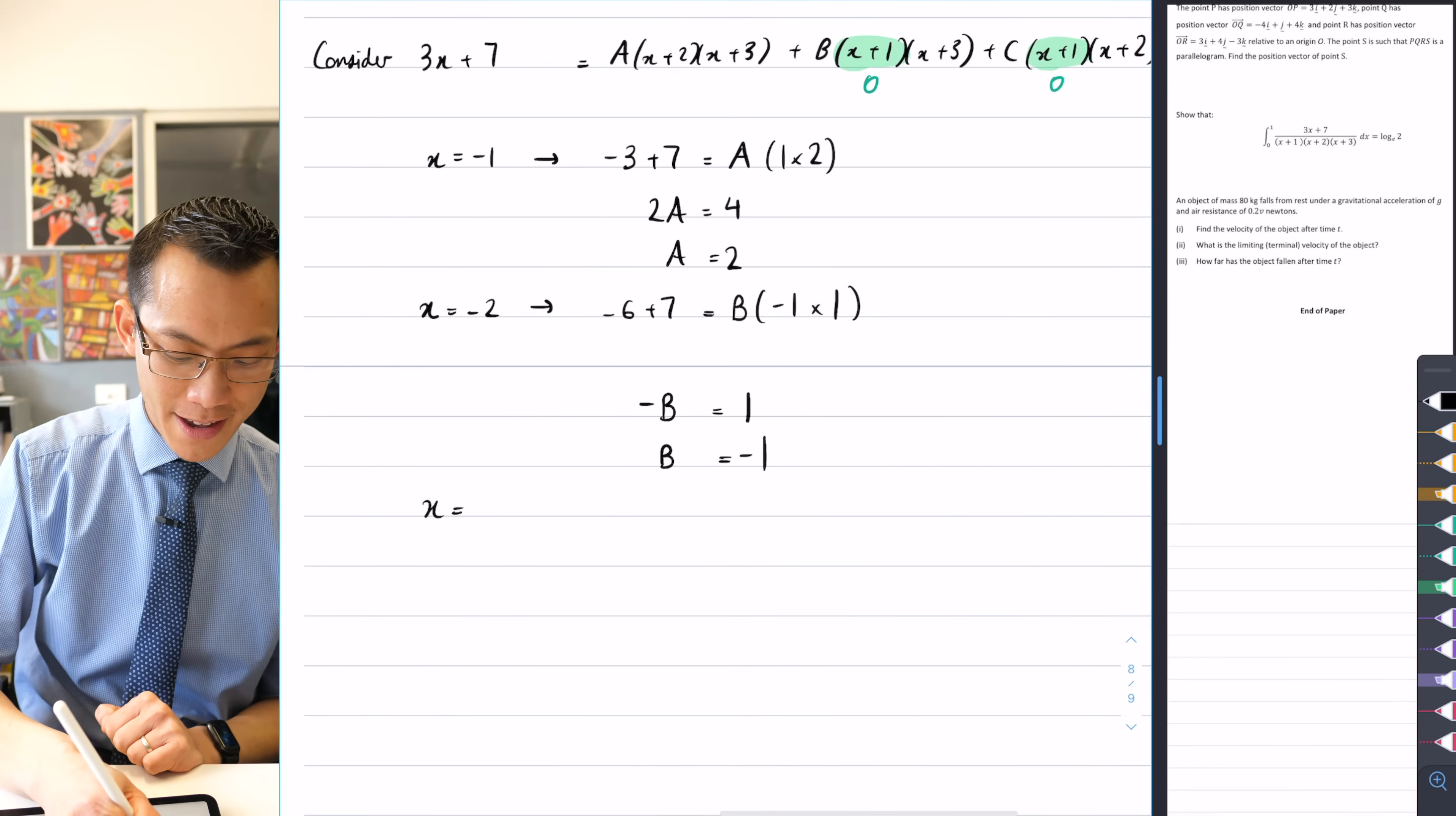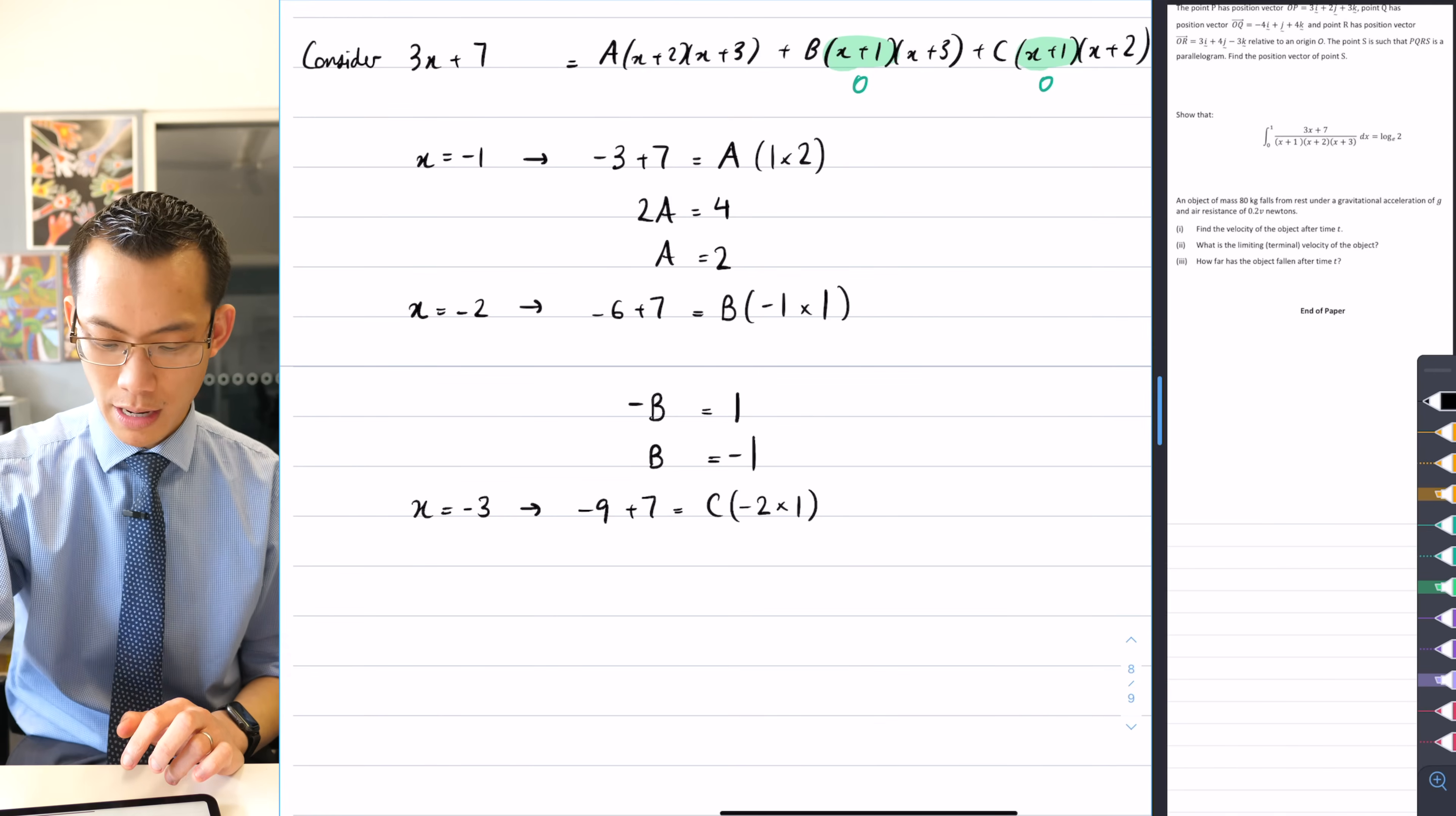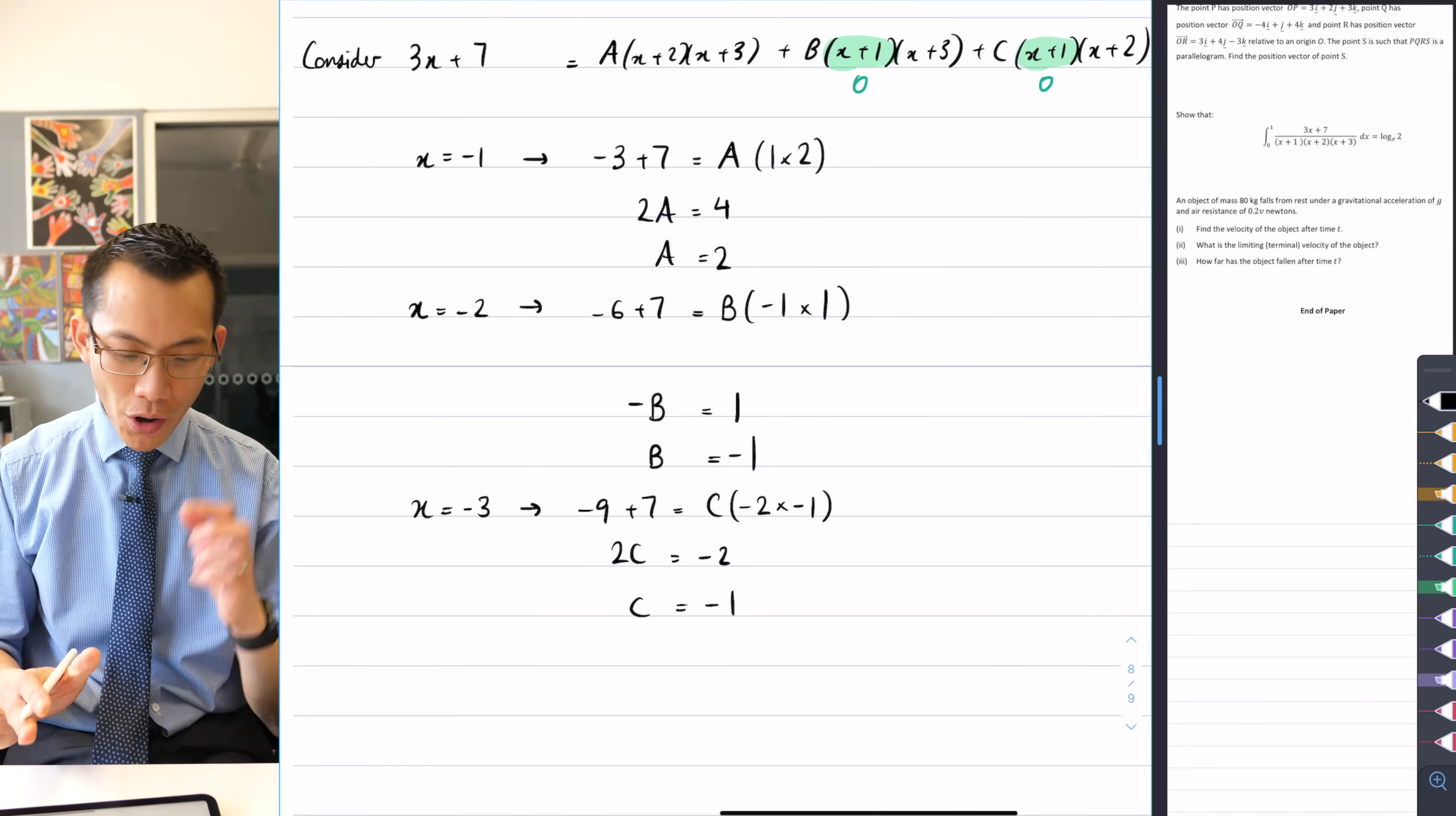Once more with feeling, pop in x equals negative three. What am I going to get? So I'll get minus nine plus seven is equal to C outside of, that looks like a negative two times negative one. See how easy it is to make these mistakes with negative signs. And then let's see here. So you're going to get 2C equals negative 2. So C is also equal to negative one, just like B.